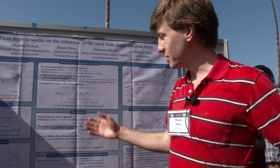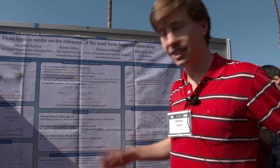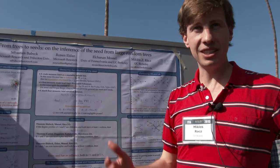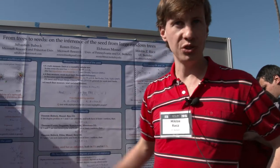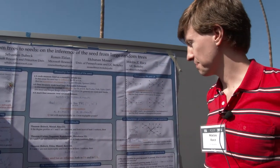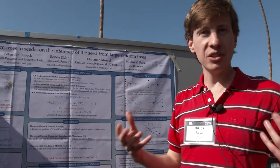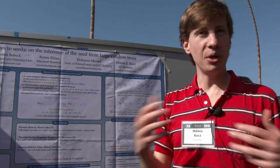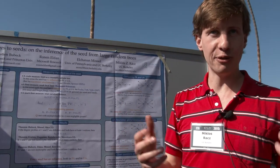So the main results are that indeed this limiting total variation distance is positive in both the preferential attachment and uniform attachment models. So the main conclusion is that every seed has an influence both in preferential attachment and uniform attachment.